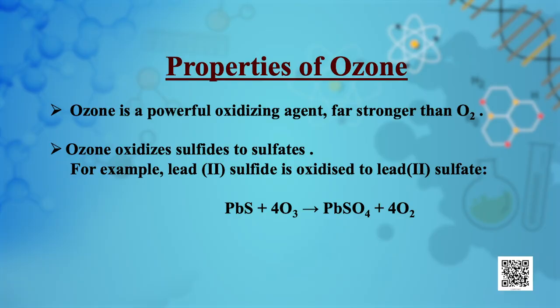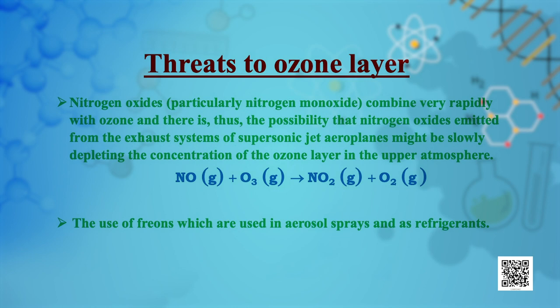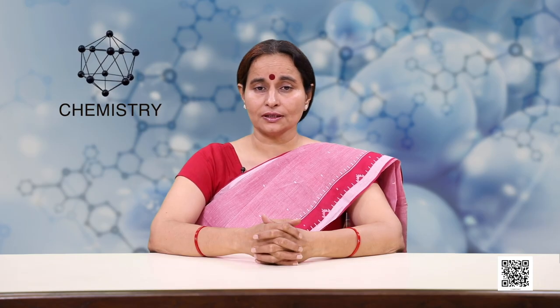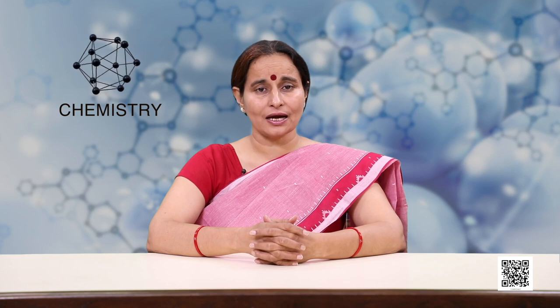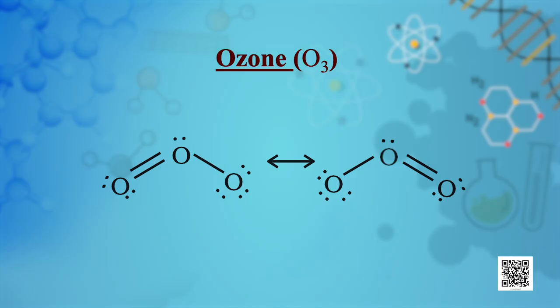As ozone readily gives nascent oxygen, it is a powerful oxidizing agent — for example, it oxidizes lead sulphide to lead sulphate and iodide ions to iodine. Experiments have shown that nitrogen oxides combine very rapidly with ozone, and nitrogen oxides emitted from the exhaust of supersonic jet aeroplanes might be slowly depleting the ozone layer in the upper atmosphere. Another threat to the ozone layer is posed by freons, which are used in aerosol sprays and refrigerants.